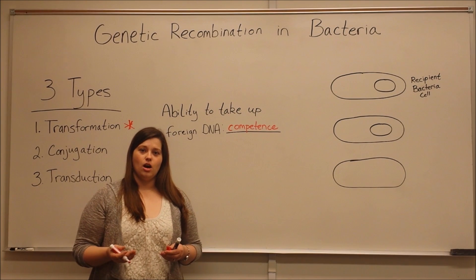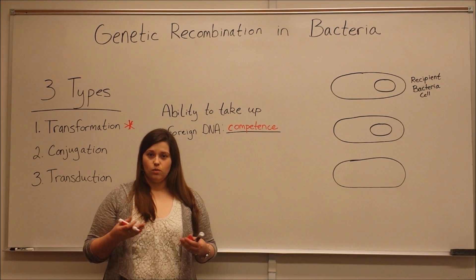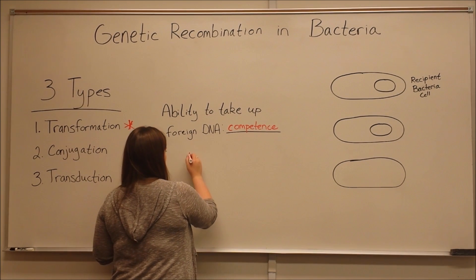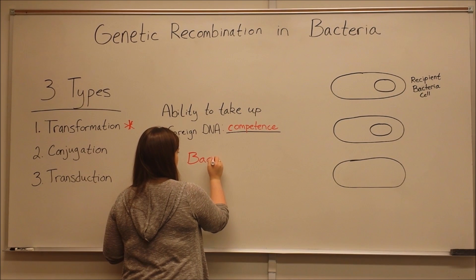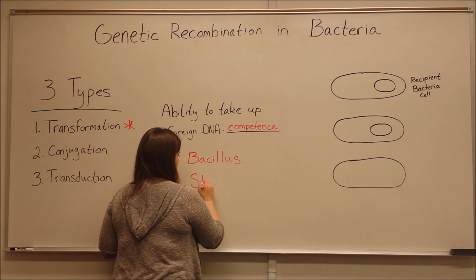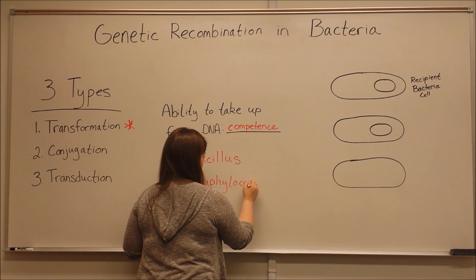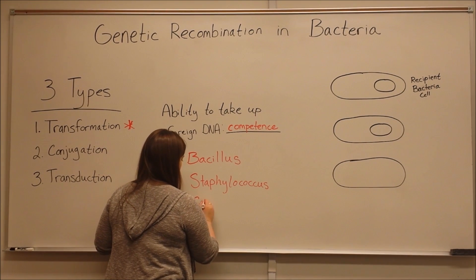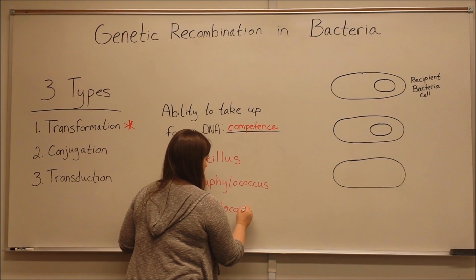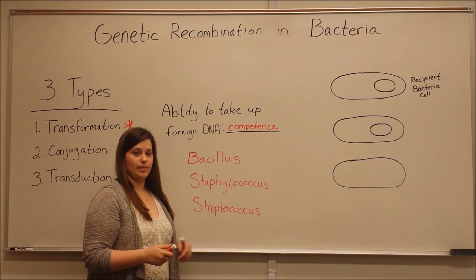Many types of bacteria are naturally competent and can do this process with ease. Examples of such bacteria include species of Bacillus, species of Staphylococcus, and species of Streptococcus. And of course there are well-known human pathogens within each of these types of bacteria.